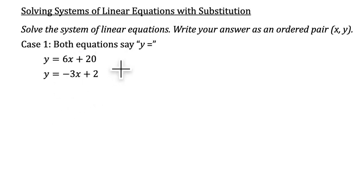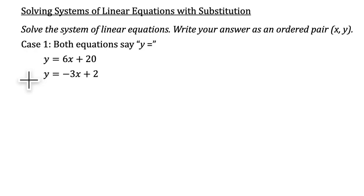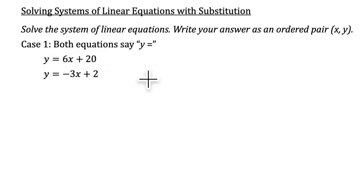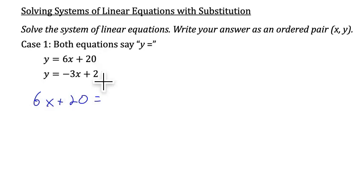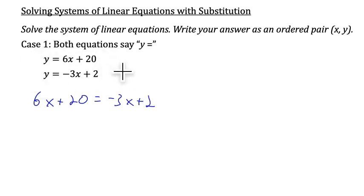We are going to solve this system of equations and write the answer as an ordered pair. This is the first case where both equations say y equals. Since both expressions on the right equal y, we will set these expressions equal to each other. So we start by saying 6x plus 20 equals negative 3x plus 2. Both of these expressions equal y, so we can say the expressions equal each other.